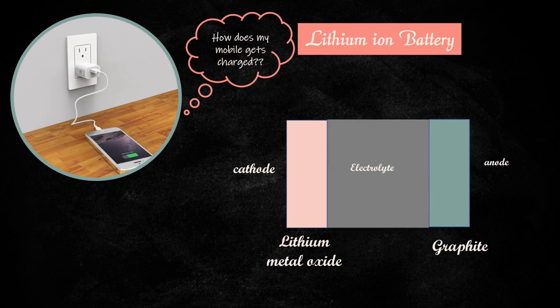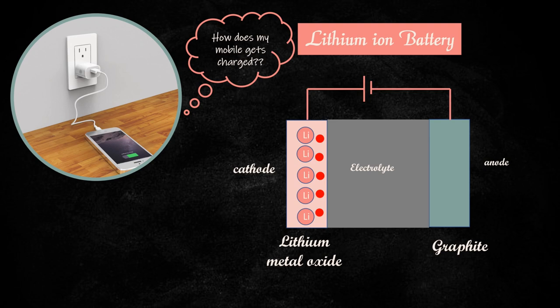The lithium present in the cathode have one valence electron. When an external DC voltage is applied, the valence electron moves towards the positive terminal of the battery and reaches the anode. Now anode becomes more negative due to the extra electrons, and lithium, who lost its electron, becomes more positive. So they move towards anode through the electrolyte. After all the lithium reaches anode, the battery is considered fully charged.